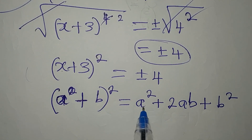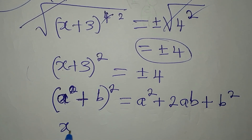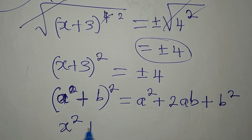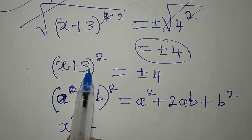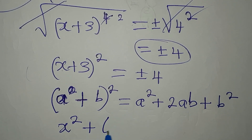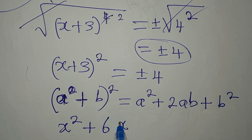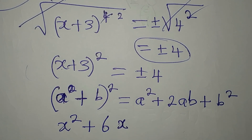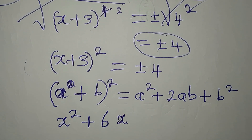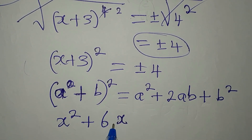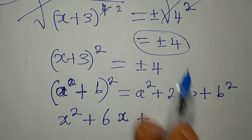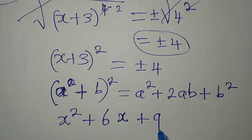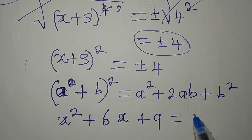So expanding: a squared gives x squared, 2ab gives 2 times x times 3 which is 6x, and b squared gives 3 squared which is 9. So the expansion gives us x squared plus 6x plus 9.